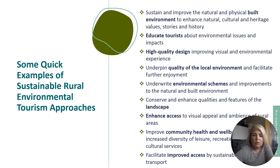Let's look at some quick examples of sustainable rural environmental tourism approaches. One would be sustaining and improving the natural and physical built environment. You can educate tourists and get them involved to minimize environmental impacts. Look at high quality design — improving visual environmental experiences through innovative practices, possibly in architecture, building, or events and festival management. Underpin the quality of the local environment, facilitate further employment, underwrite environmental schemes, conserve and enhance landscape features, enhance access and appeal, and improve community health, well-being and access.